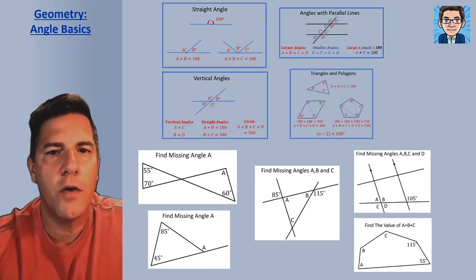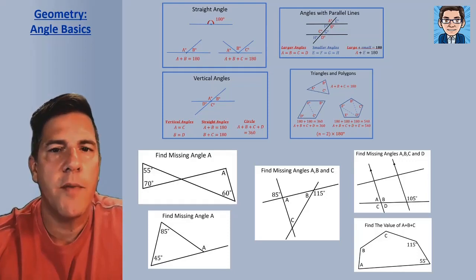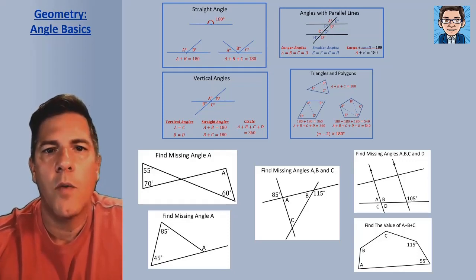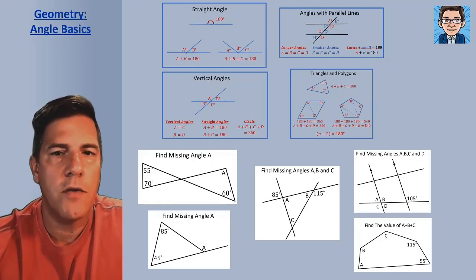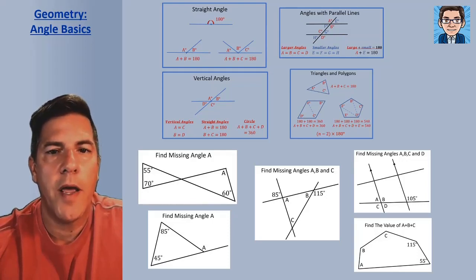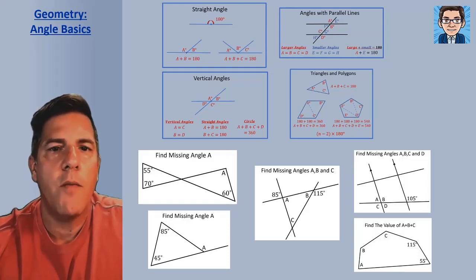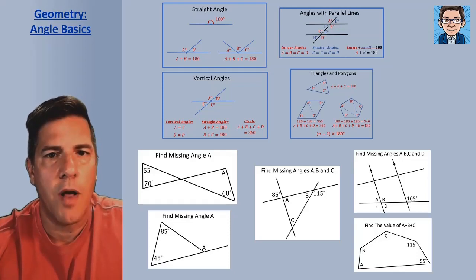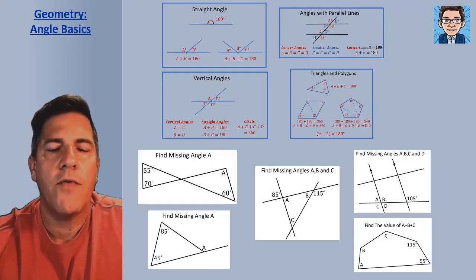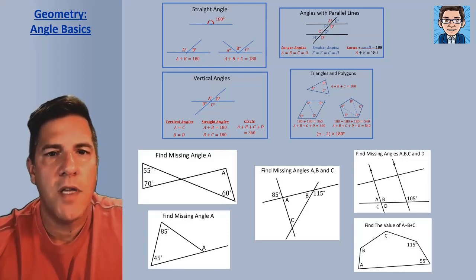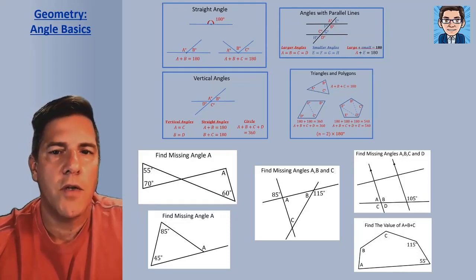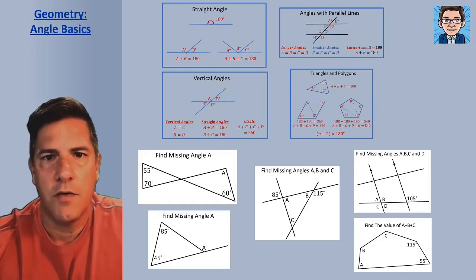In this video we're going to take a look at angle relationships and problems that involve finding missing angles. We're going to talk about some angle basics including straight angles, vertical angles, angles that are formed when a line crosses two other parallel lines, and then angles in triangles and other polygons. Then we've got five sample problems involving finding missing angles that we're going to solve and discuss.